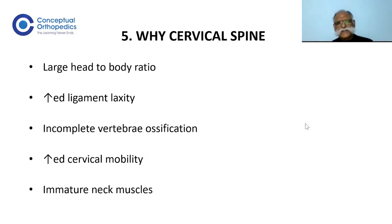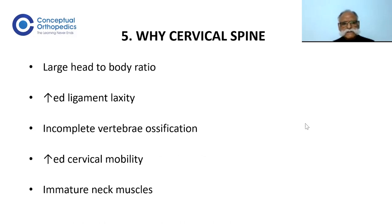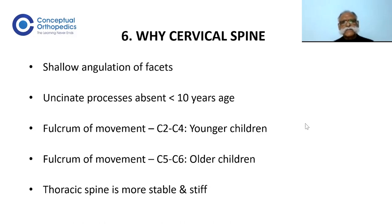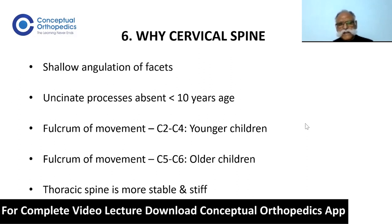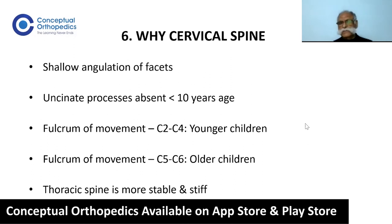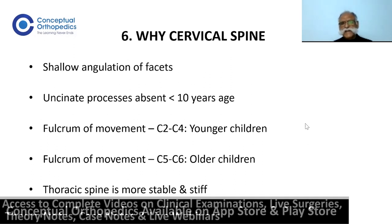Why is the cervical spine involved? In younger children, the cervical spine is involved because they have a large head-to-body ratio, increased ligamentous laxity, incomplete vertebral ossification, increased cervical mobility, relatively immature neck muscles, and the facets in the cervical region have shallow angulation. The uncinate processes have not developed by the age of 10 years.